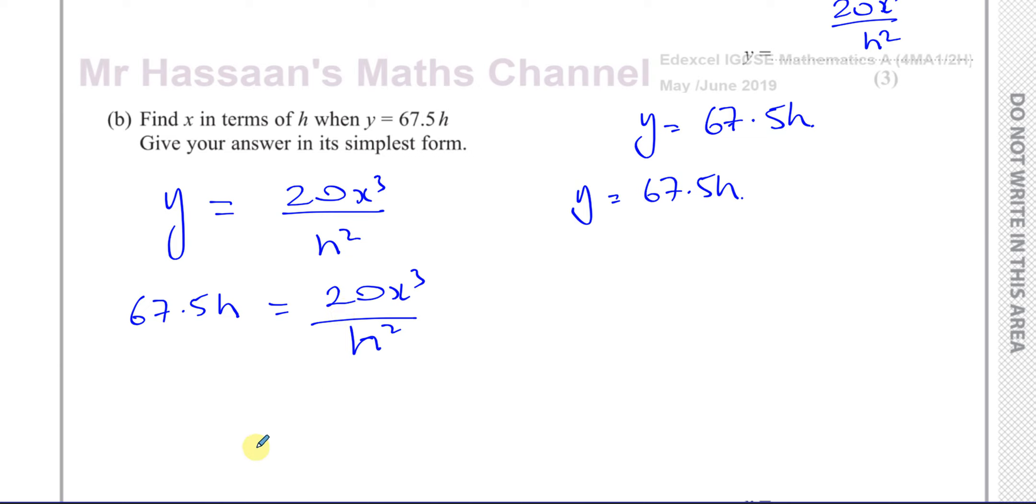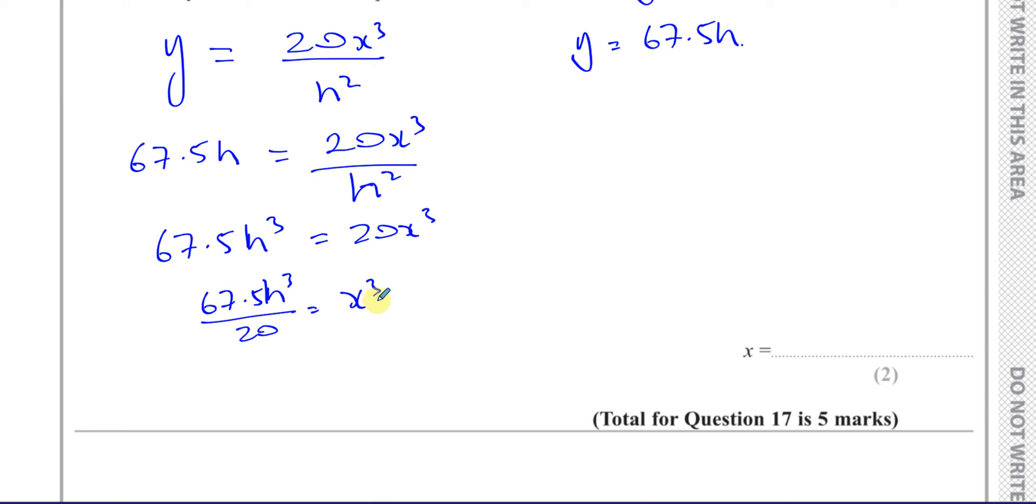You've got 20x cubed over h squared is equal to 67.5h. We can multiply both sides by h. We have 67.5 times h cubed equals 20x cubed. We can divide both sides by 20. So we're left with 67.5h cubed over 20 equals x cubed.